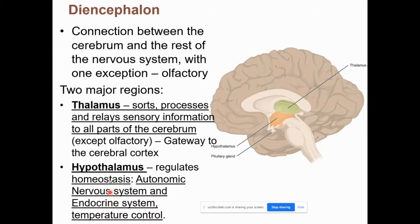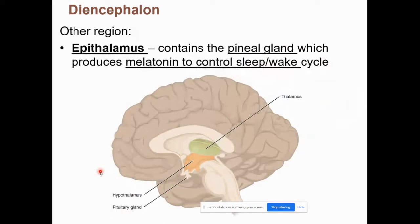The hypothalamus is a big one — a small region responsible for a lot: homeostasis (maintaining steady states), the autonomic nervous system (ANS, chapter 15), the endocrine system (glands that secrete hormones), and temperature control. Don't forget those underlined areas to match with the hypothalamus. The epithalamus, in the back of the diencephalon, contains the pineal gland, which secretes melatonin for your sleep cycle.